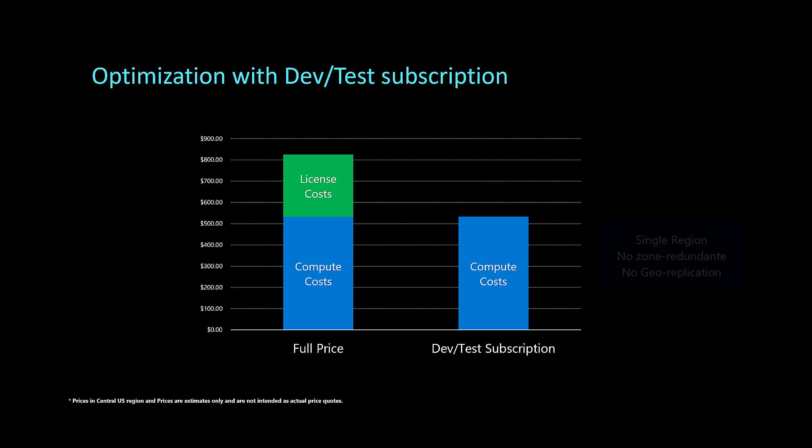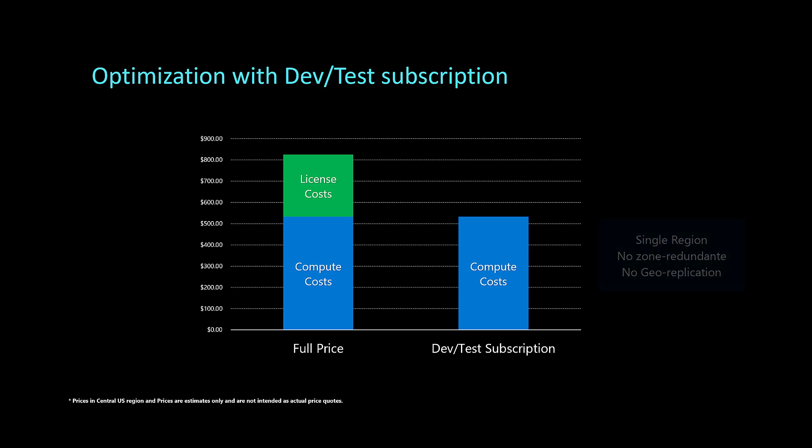I've chosen the Central US region to compare prices on a managed instance with 4 vCores. If you don't apply any optimization by end of the month, you will pay around $800 for your instance. Let's break down this number — you have to pay around $530 for computing and $290 for license.